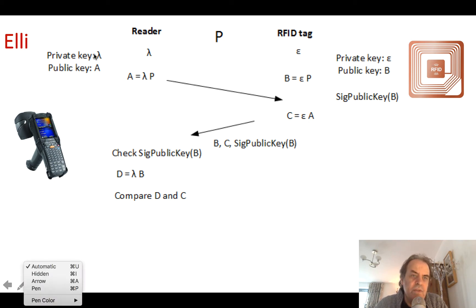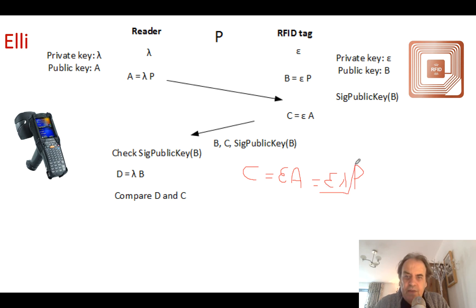Okay, so C is equal to epsilon A, and that's equal to epsilon lambda P. So the gradient there is epsilon times lambda. If we look at the value of D, then D is equal to lambda B, which is lambda epsilon P.